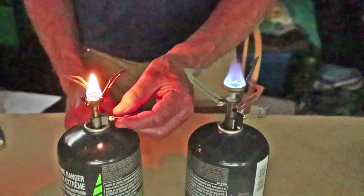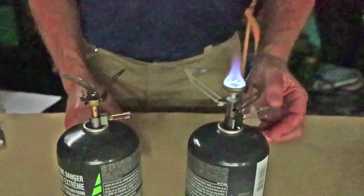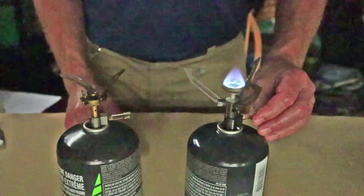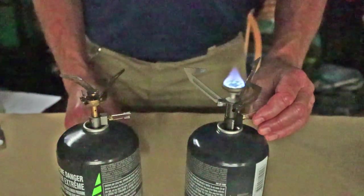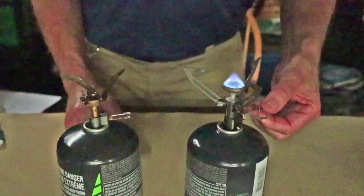Whereas now the Bulin looks like a candle flame and gone. I think I may be able to get the Fire Maple down even a little bit further. I am impressed with that.